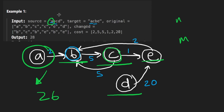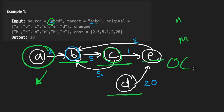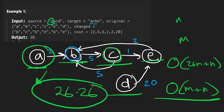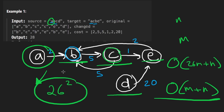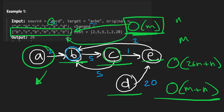This reduces the time complexity to O(26 * M + N), which reduces to O(M + N). The space complexity comes from the graph itself — the number of edges, O(M), plus the hash maps which are bounded by 26 squared in the worst case and are technically constant. Anyway, let's code it up.